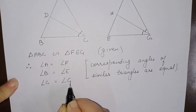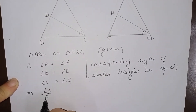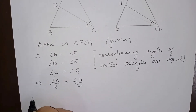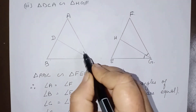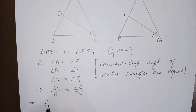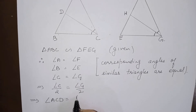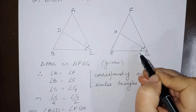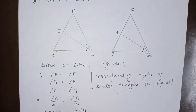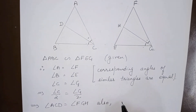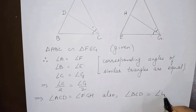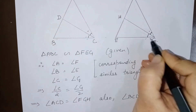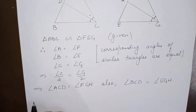Since angle C equals angle G, this implies that half of angle C equals half of angle G, because when two things are equal their halves are also equal. Therefore, angle ACD equals angle FGH, and similarly angle BCD equals angle EGH.